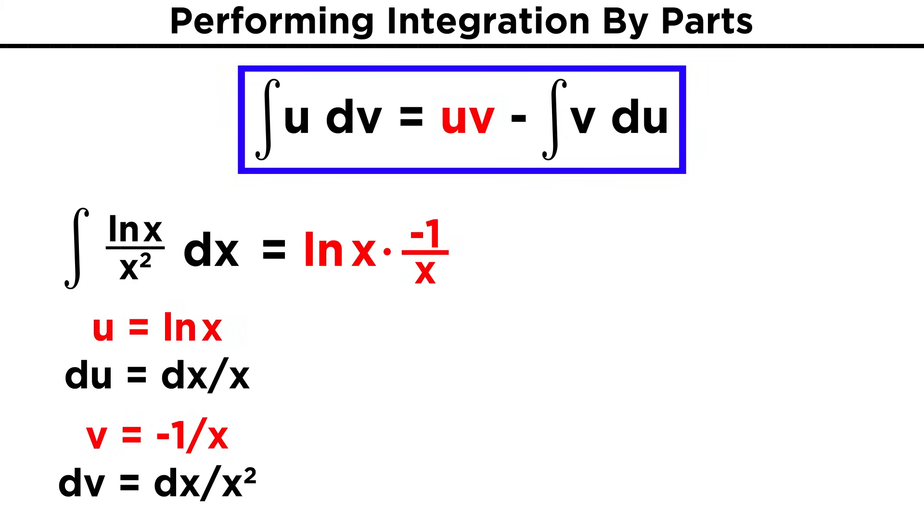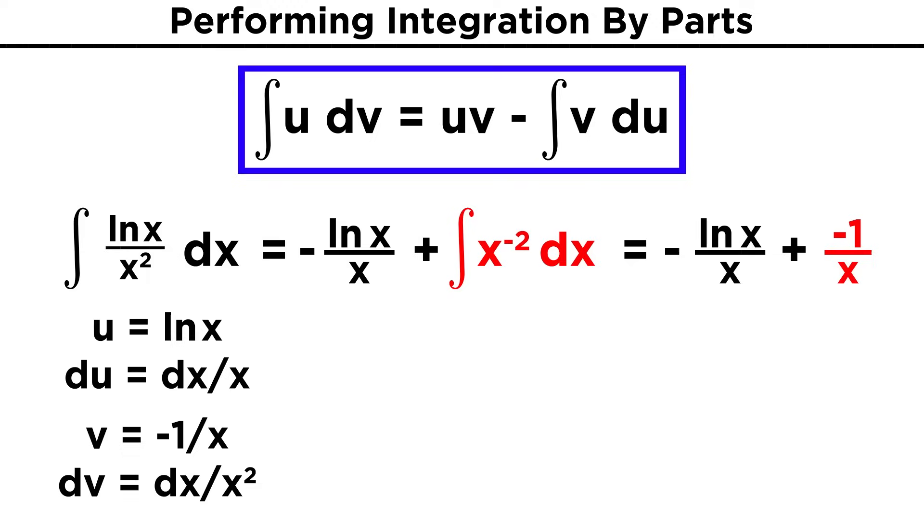So to evaluate this, we write uv, which here will be ln(x) times negative one over x, or negative ln(x) over x. Then we subtract the integral of v du, which will be negative one over x times one over x dx. We can take the negative out to cancel out the first, making this a plus sign, and inside the integral, we have one over x squared dx, or x to the negative two dx. We can integrate this to get negative one over x once more.